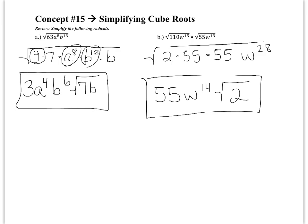So here are the correct answers for these two problems. I did both of these in what I consider the fastest way possible, pretty much in one step. For this one, the perfect square that goes into 63 is 9, so I broke that into 9 times 7. a to the 8th was already a perfect square, so I left it alone. b to the 13th I had to break into b to the 12th times b. The three things I circled are my perfect squares, so I pulled out the square root of 9, which is 3, the square root of a to the 8th, which is a to the 4th, and the square root of b to the 12th, which is b to the 6th. What was left on the inside was 7b.